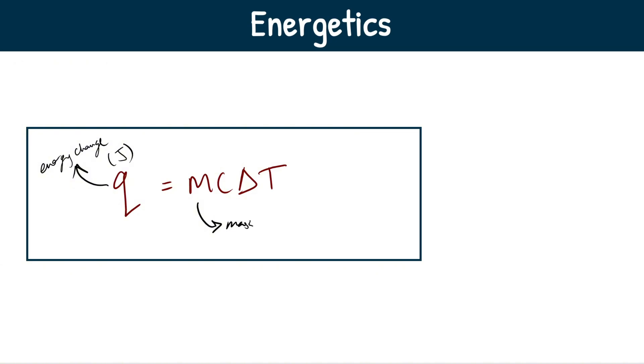M, this is going to be our mass, specifically of the solution, and that is in grams. Mass of solution in grams. This C right here, you don't need to remember what this is in terms of the actual value, it's always given to you, but it's the specific heat capacity of water. And the unit for that is joules per gram per Kelvin.